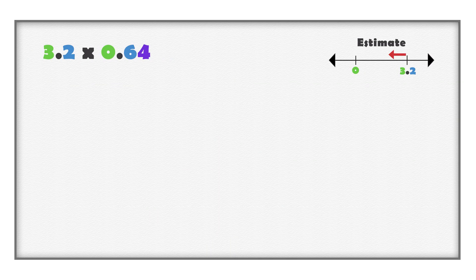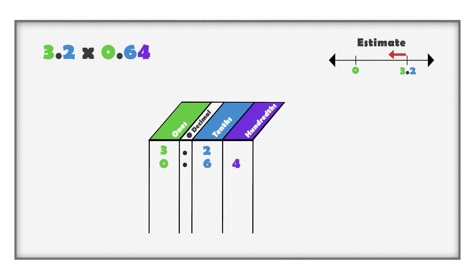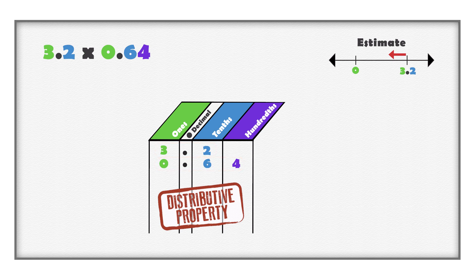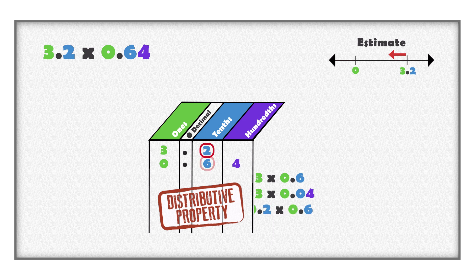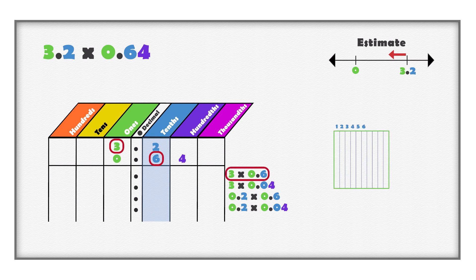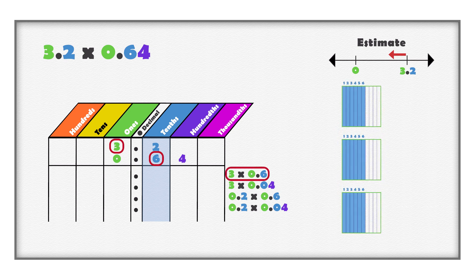Another way to multiply these decimals is to line up the digits by place value. We can use a place value chart to help organize the digits. When using the distributive property, multiply the value of each digit in one number with each digit in the other number, and then add together the partial products. Multiply three with six tenths and with four hundredths, and multiply two tenths with six tenths and with four hundredths. When whole numbers are multiplied with tenths, you get tenths. Three multiplied with six tenths means three groups of six tenths, or eighteen tenths.